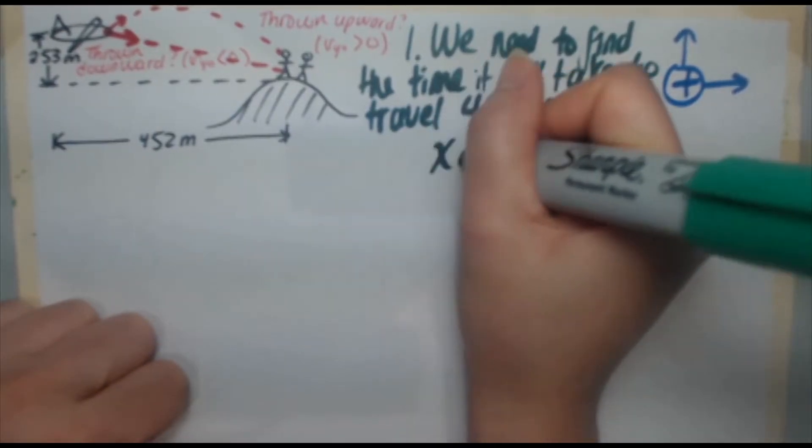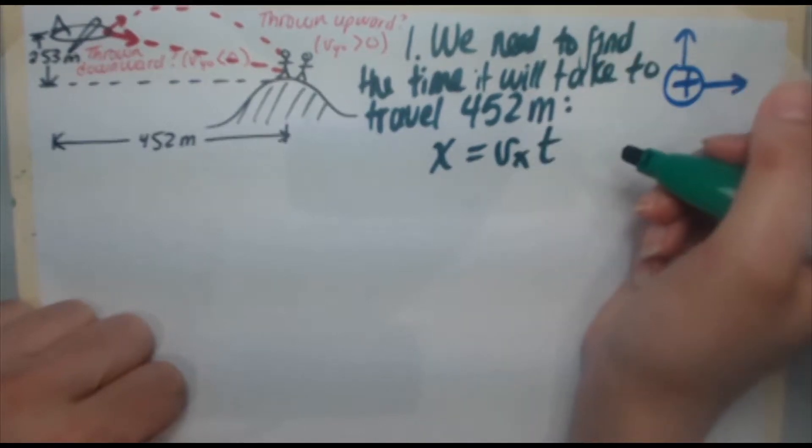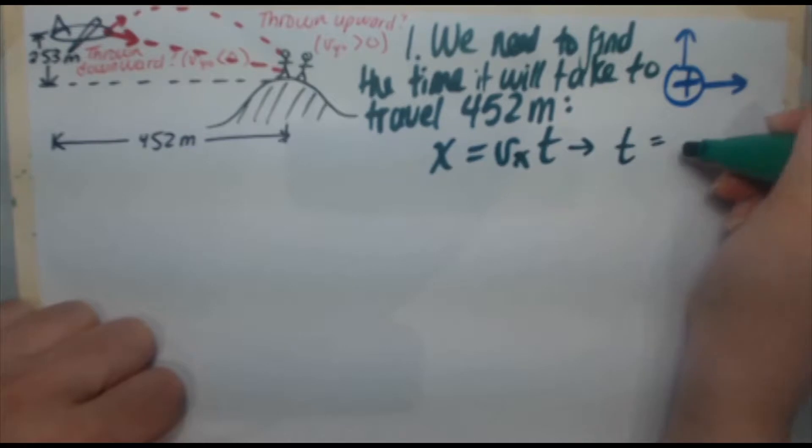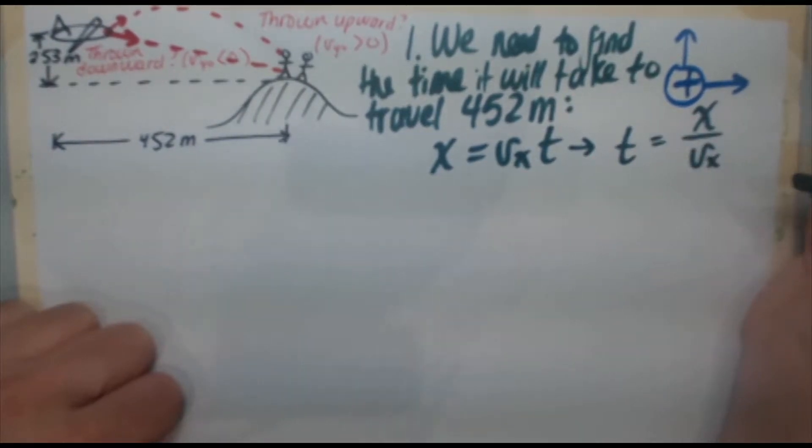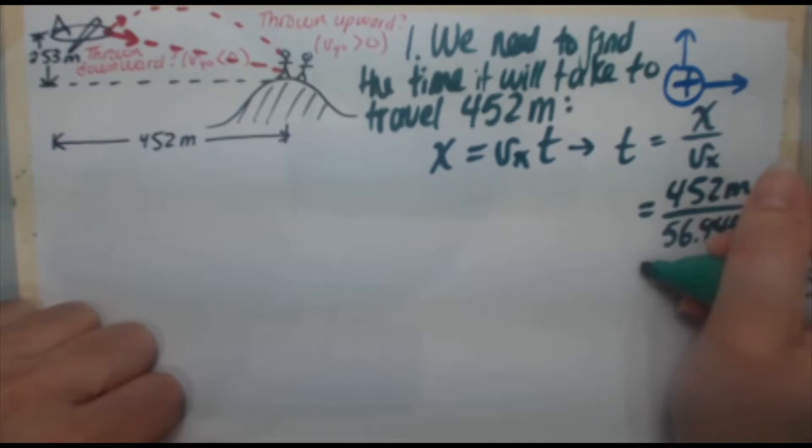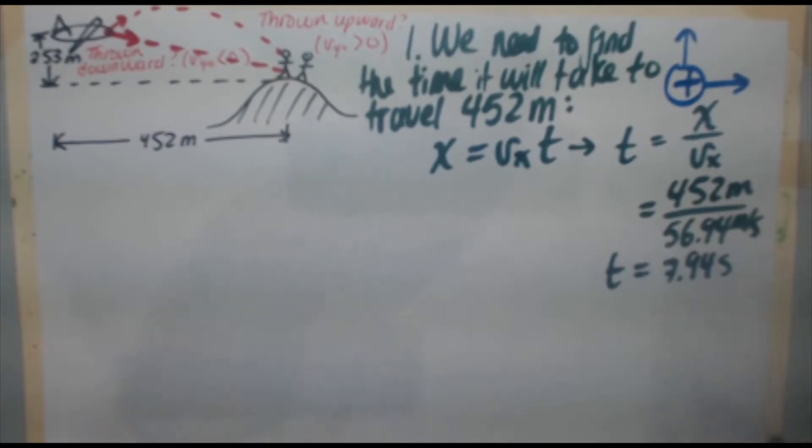So we need to use our other component, which is X, to determine it. We need to find the time it will take to travel 452 meters. Remember, we are already given the initial horizontal speed, and we determined time from the previous video. So here's what we're going to do. We're going to say X is equal to speed times time. Again, no acceleration in the X direction. Rearranging this expression for time, divide both sides by VX, you're going to get X over VX. So X is 452 meters, your speed is 56.94 meters per second, and we end up with time to be 7.94 seconds. There we go, we've got the time.